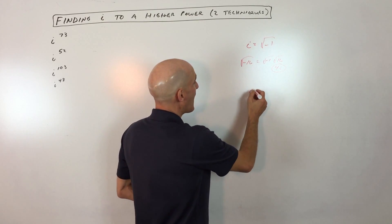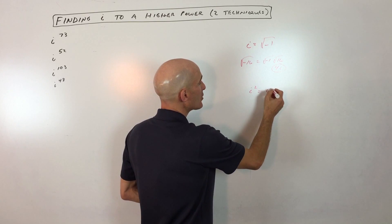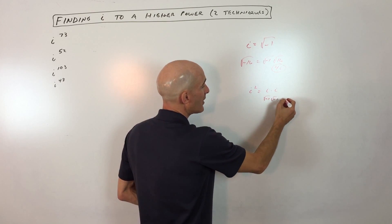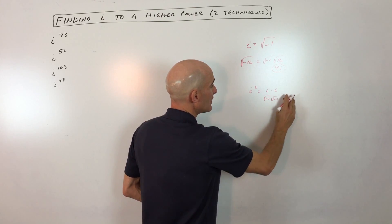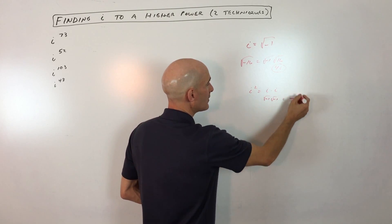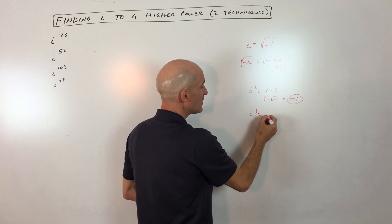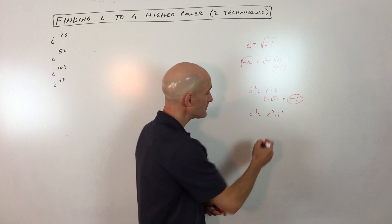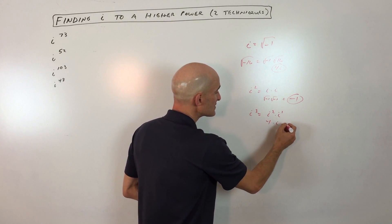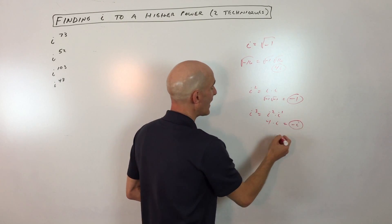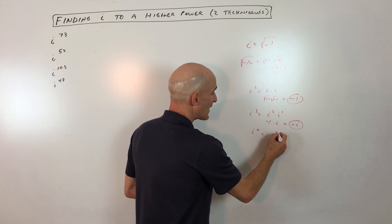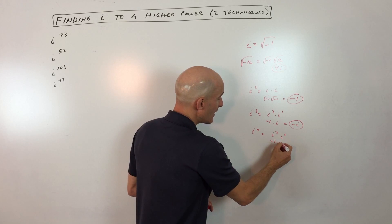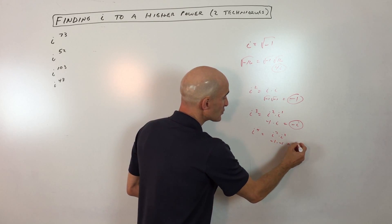If you look at i squared, i squared is i times i — the square root of negative 1 times the square root of negative 1 — and this just equals negative 1. And then if we look at i cubed, i cubed is i squared times i to the first, because when you multiply you add the exponents. i squared is negative 1 times i, which gives us negative i. And then i to the fourth is i squared times i squared, which is negative 1 times negative 1, which equals positive 1.